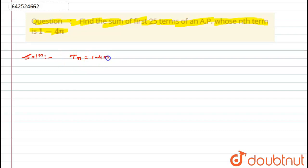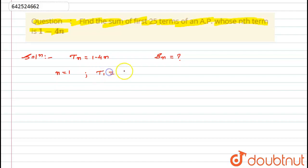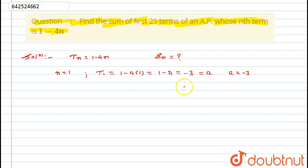We have been given t(n) is equal to 1 minus 4n, and we have to find S(n). Now, to find the first term, I will put n equal to 1. So t(1) is equal to 1 minus 4 into 1, which is equal to 1 minus 4, which is equal to minus 3. As we know the first term of an AP is denoted as a, so here I get a is equal to minus 3.